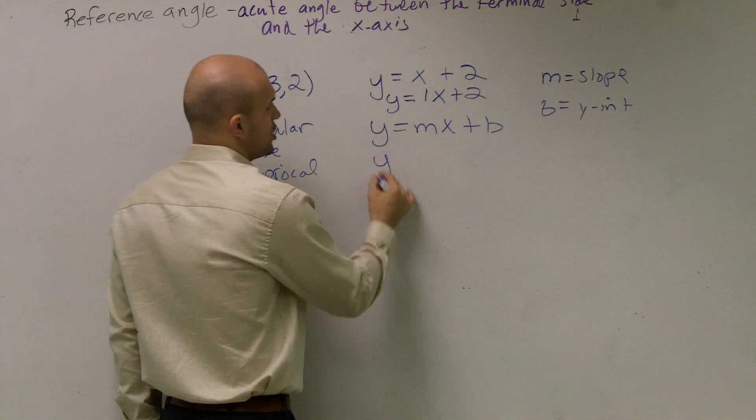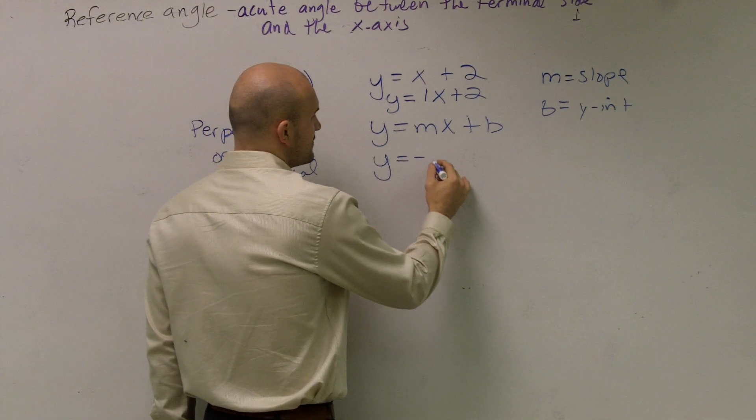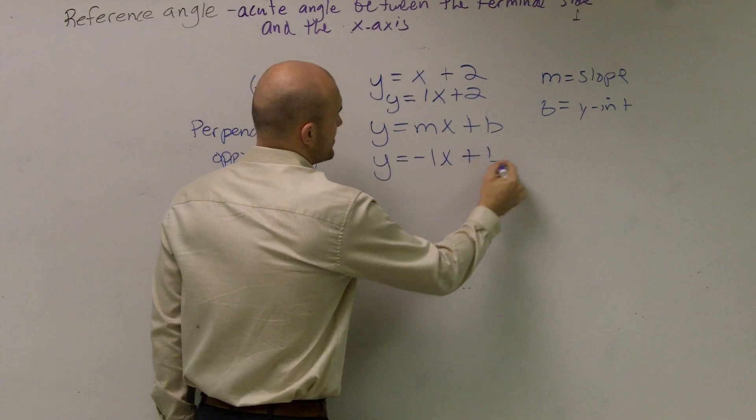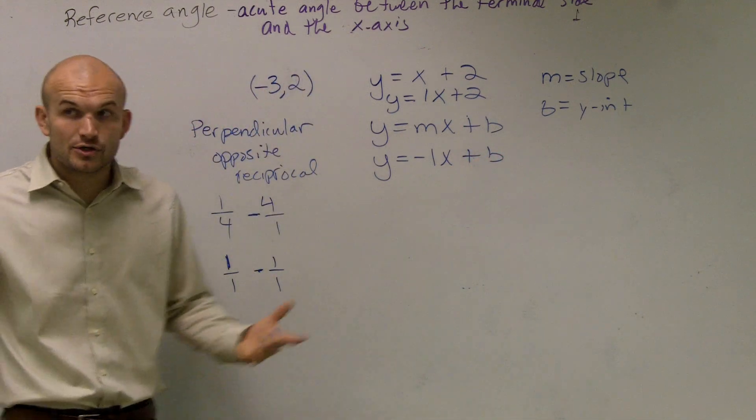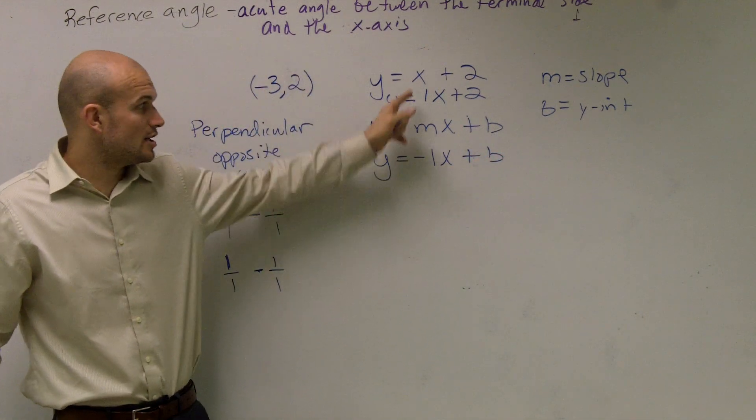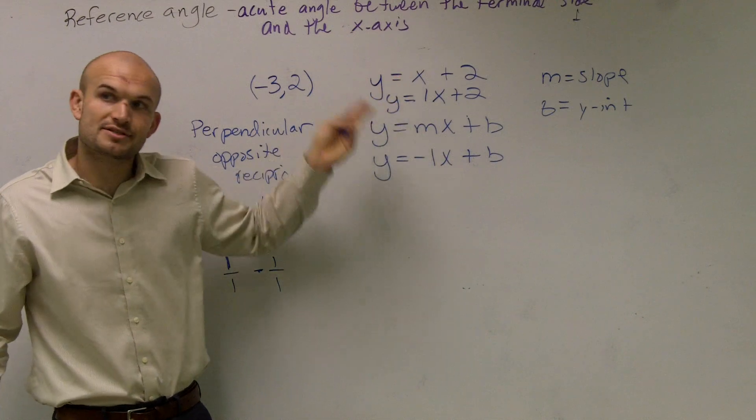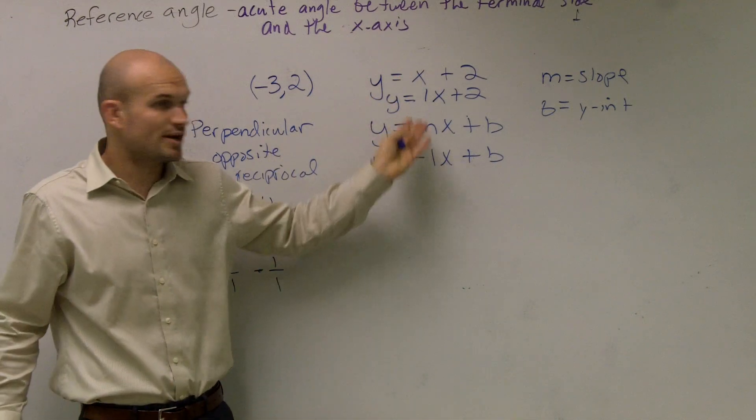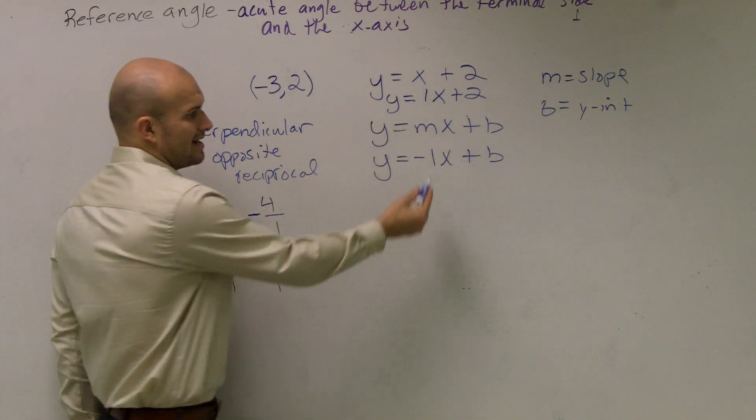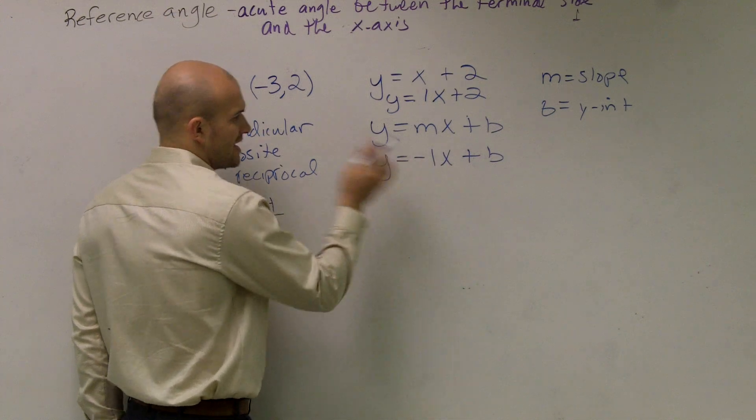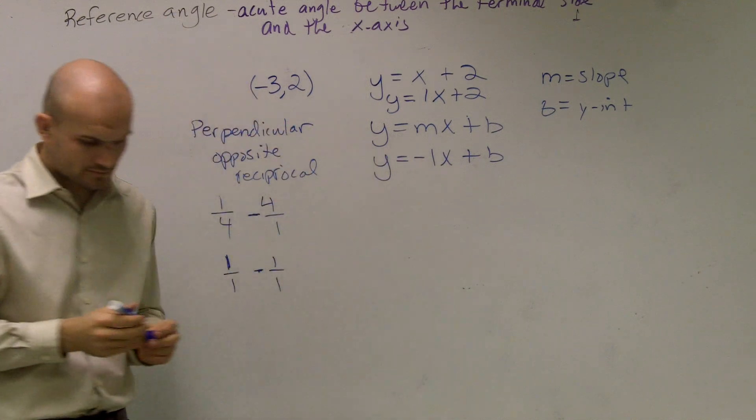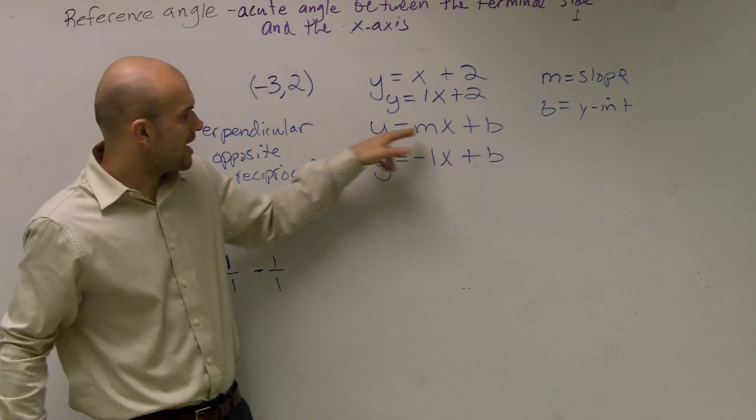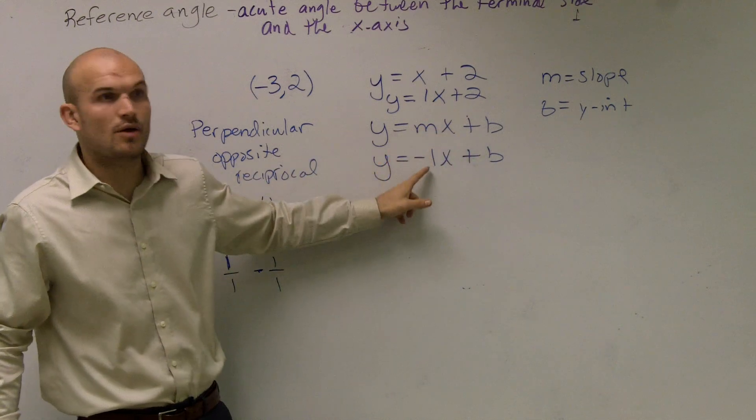So I can say my new slope is y equals a negative one x plus b. My new slope is the opposite of what my original slope is, and it's the reciprocal. The reciprocal of one over one is one over one. I'll just leave it in there. So therefore, out of y equals mx plus b, we've figured out what the slope is.